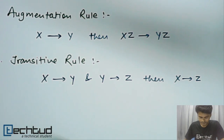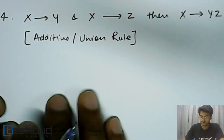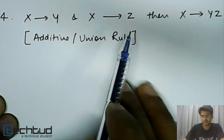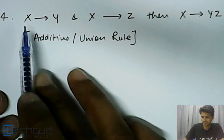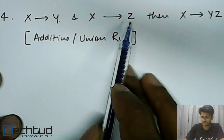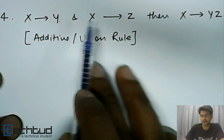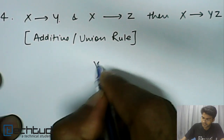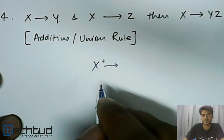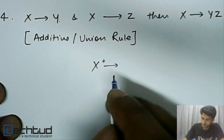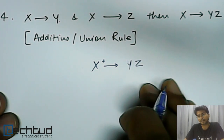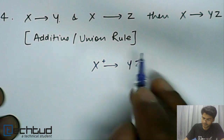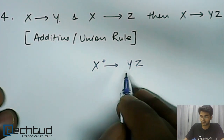The fourth inference rule is the additive or union rule. The additive union rule says if x can determine y and x can determine z, then we can collectively say that x can determine yz. This is again an obvious rule. We know x can determine y and x can determine z, and when we study closure of attributes — x-plus or closure of an attribute — we can say x determines y and z, so collectively x can determine yz.